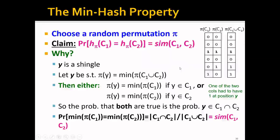So let's look at an example. Let's say that we have already chosen a permutation pi. This column is the permuted version of C1, and this is the permuted version of C2. Correspondingly, this is the permuted version of C1 union C2. Let's say that y is a shingle and pi of y is actually the hash value of C1 union C2.